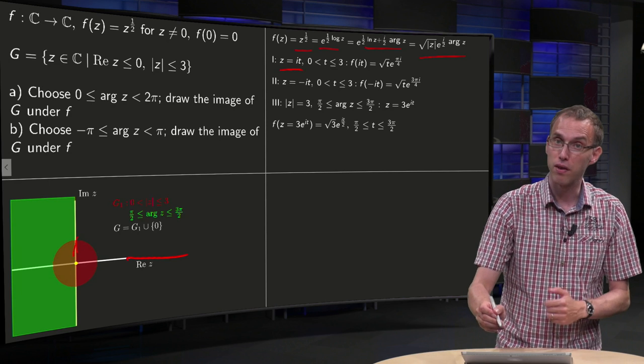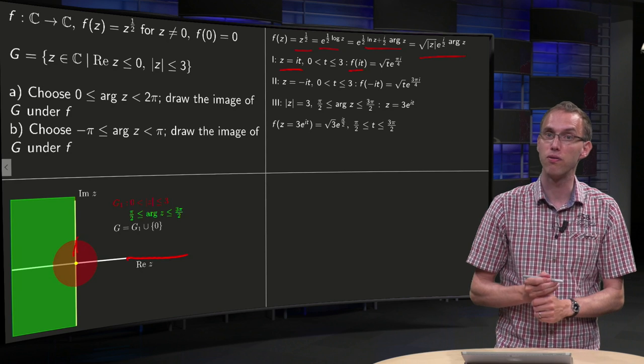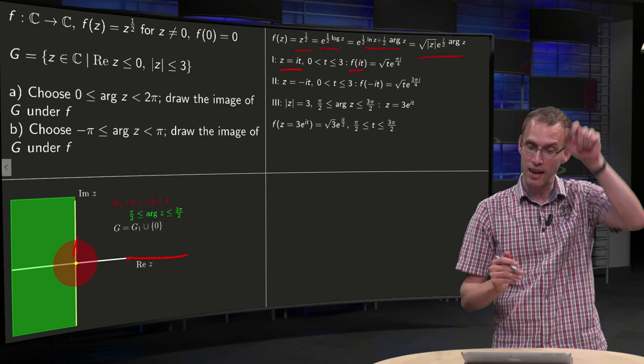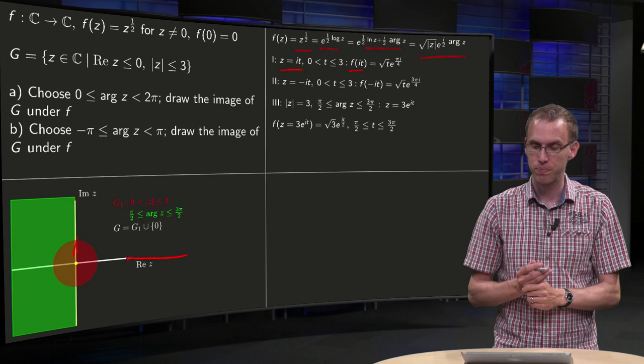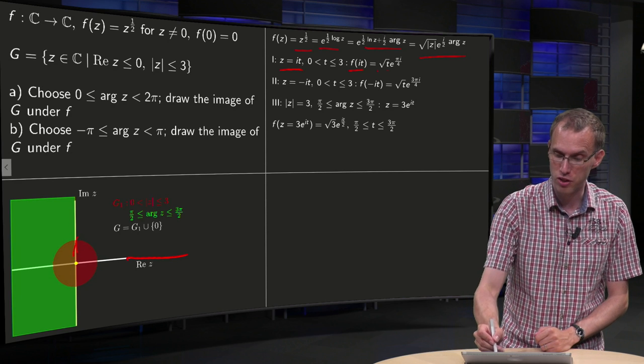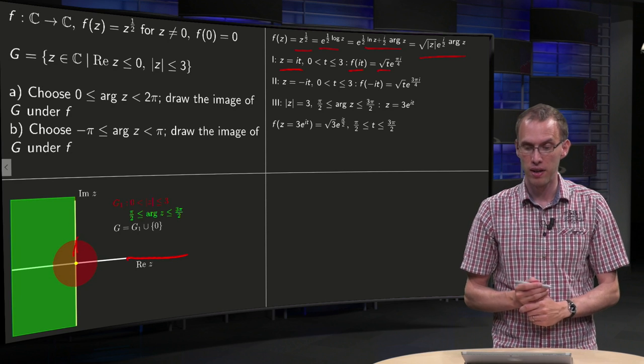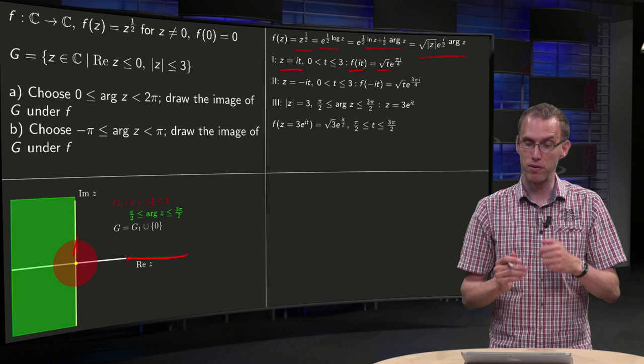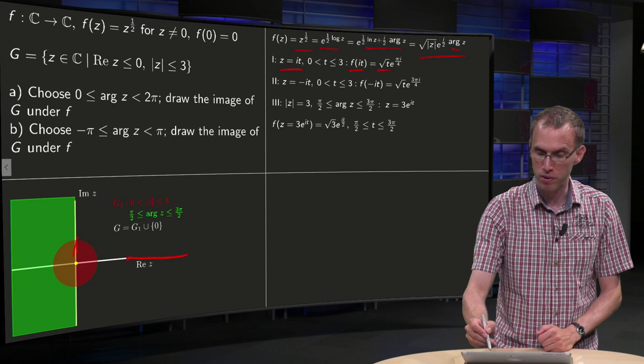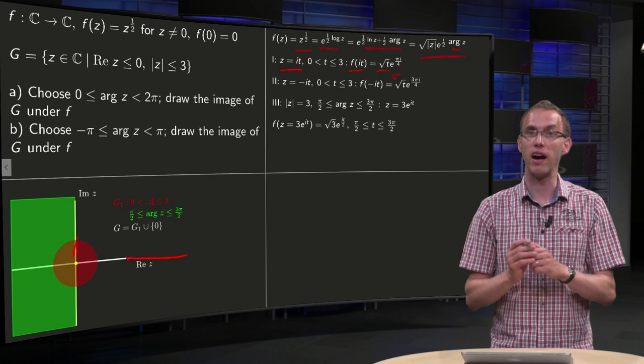Then if you look for f at it, the norm of z is just t, so you get the square root of t. The argument is everywhere pi over 2, so if you take one half, you get the square root of t times e to the power of pi i over 4.